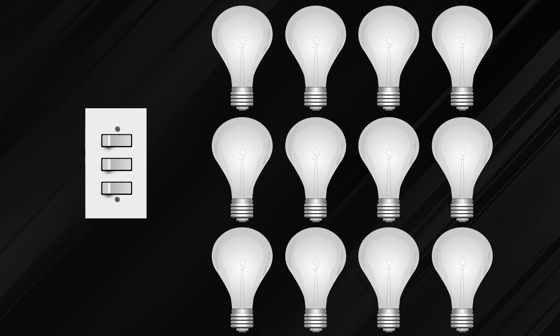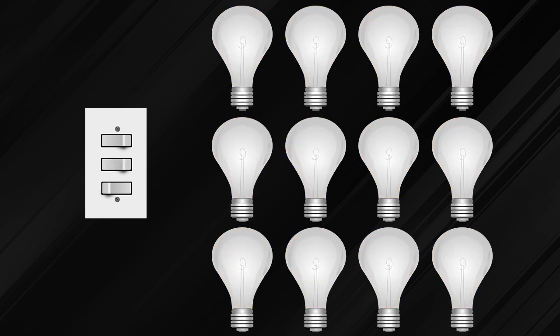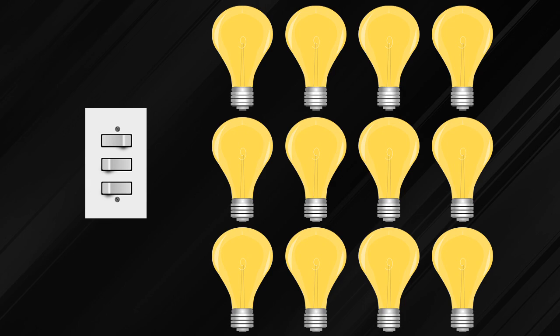Imagine if the light switches in your house turned all your lights on or off at the same time. You flip one switch, all the lights are on. Flip another switch, all the lights are off. That would seem kind of bizarre, right? If you're just going to the kitchen for a midnight snack, why do you need the lights to be on in the laundry room and the office and everywhere else? That's pretty unnecessary.